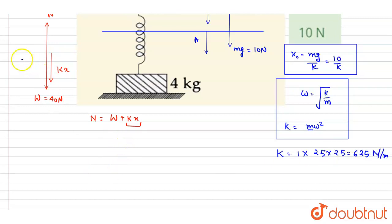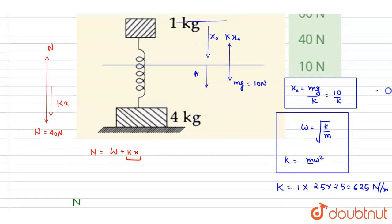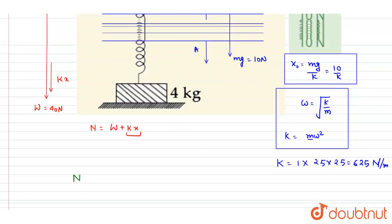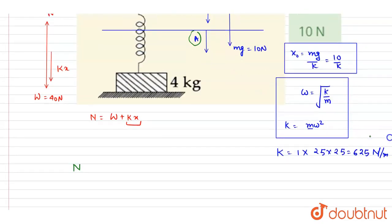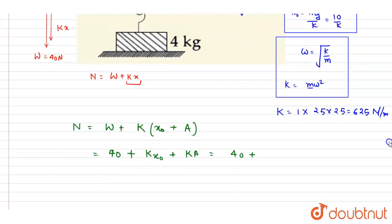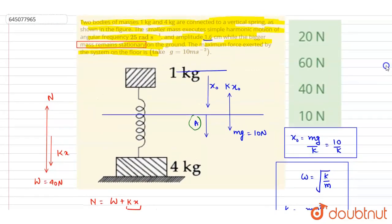So if you see, as we got the k value, right, we can write down the normal reaction. First of all, you can get this equilibrium position x naught here. X naught is 10 by k, right? And further the spring is getting compressed by this amplitude 1.6. So what I will write down: it is W plus k times x naught plus A. Put the value: W is 40, and k x naught - and k x naught is nothing but mg, that is 10. And k we already got it is this, and amplitude is 1.6 centimeters.